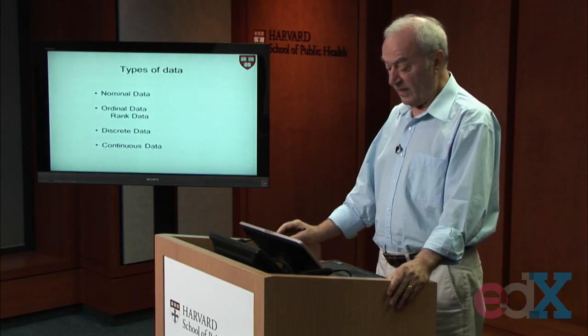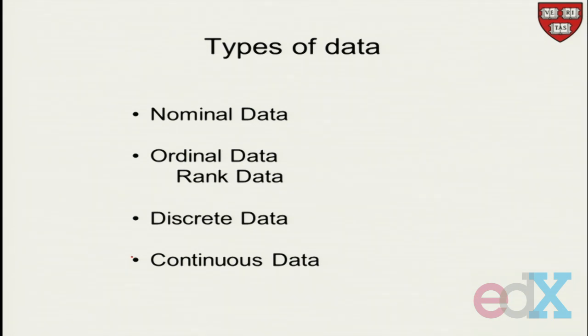In summary, these are the kinds of data we looked at — our taxonomy. It's basically four groups: nominal data, ordinal data, discrete data, and continuous data. The reason we go into this much detail is because we use different statistical methods when we have nominal data versus ordinal data versus discrete data versus continuous data.